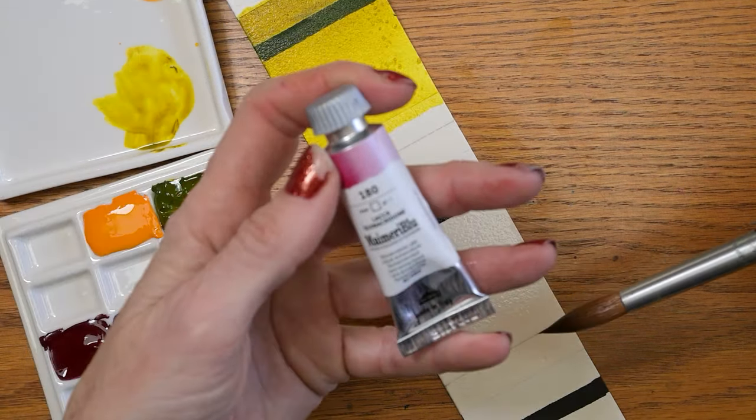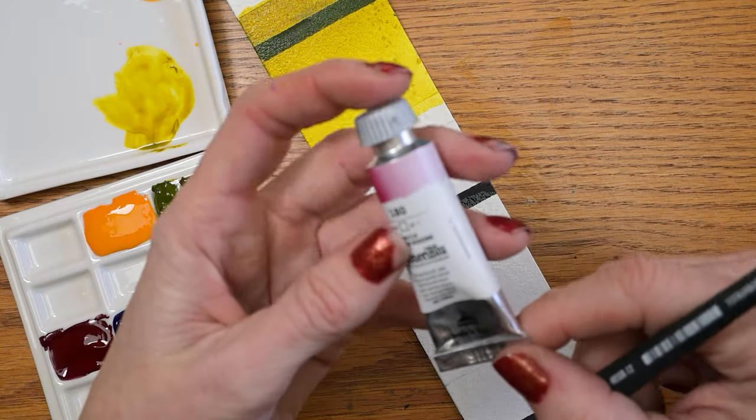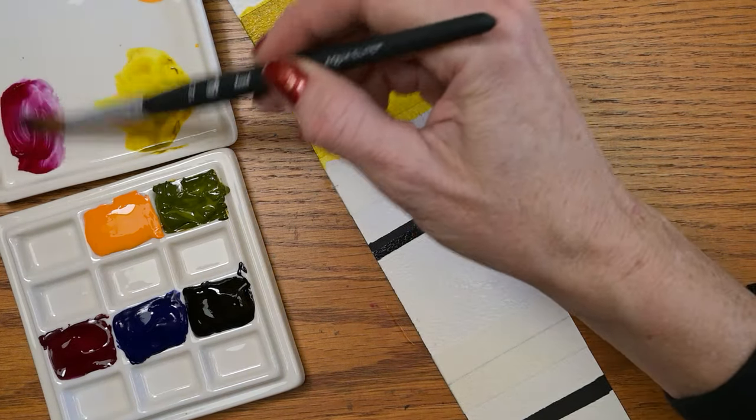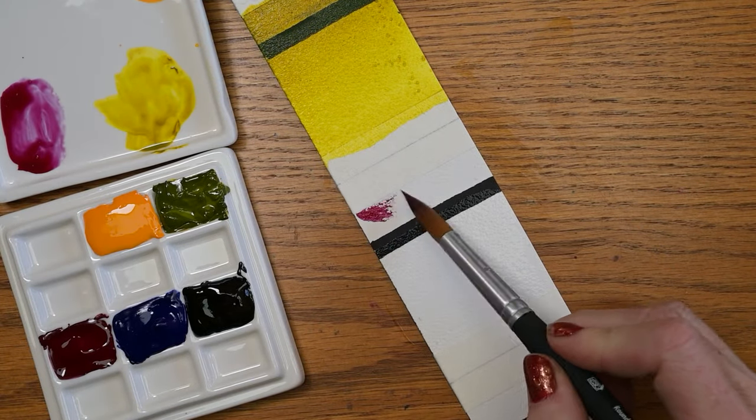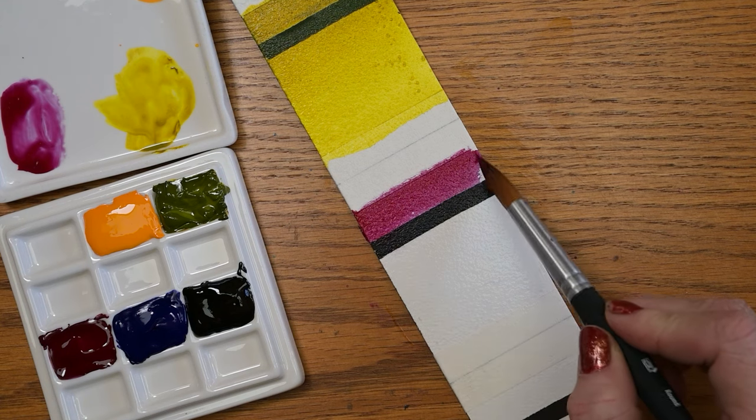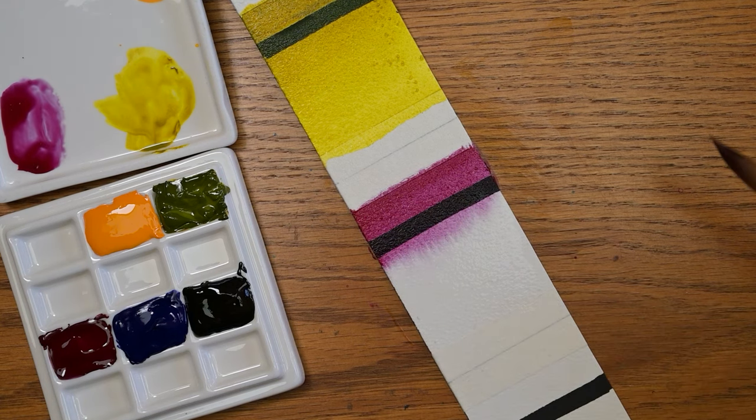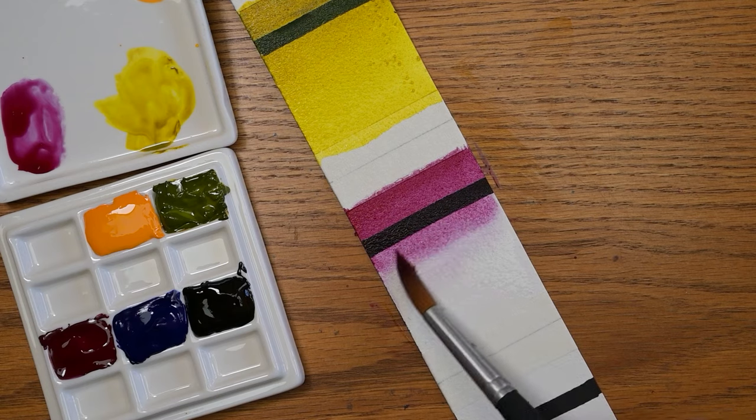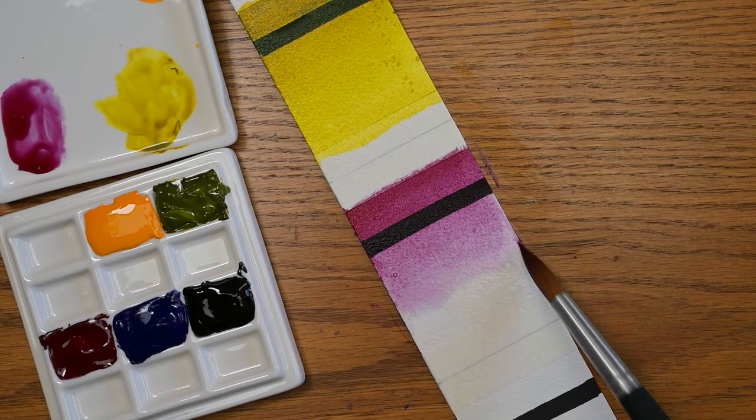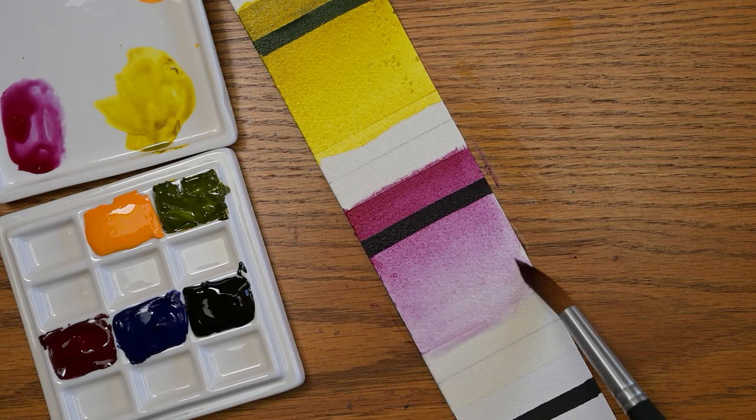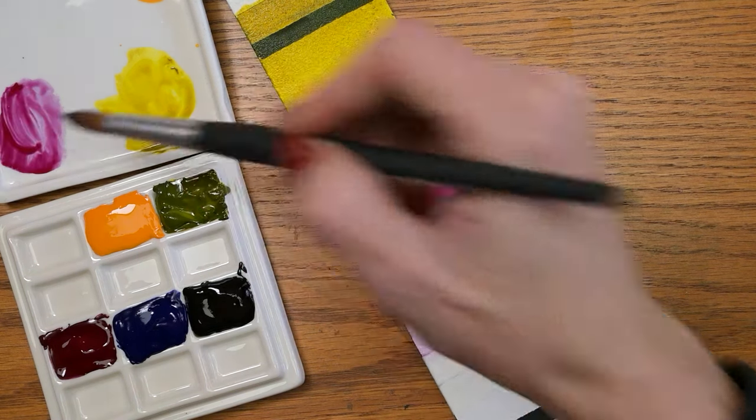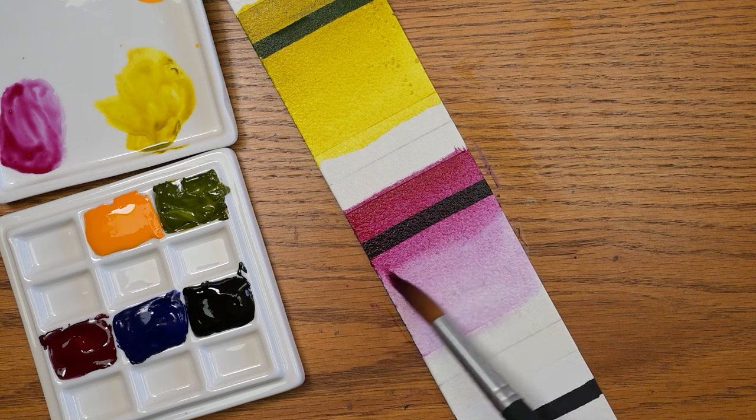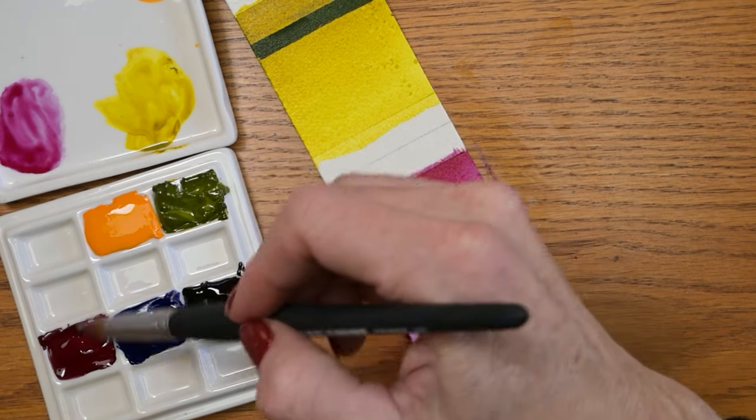Next up we have quinacridone lake, three-star lightfast rating, transparent staining, and it's a PV19. Oh, that's very, very vibrant. Looks like it's going to move in water too. I could tell that just from putting it on the ceramic palette. Yes it does. That is gorgeous, absolutely gorgeous. Wow, oh it moves so prettily. It's a really nice light purple when it's diluted, yet it's a deep pink in its mass tone.